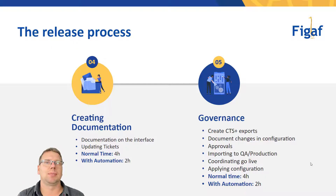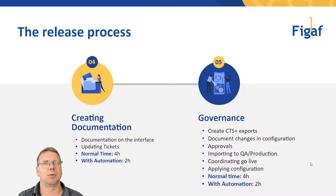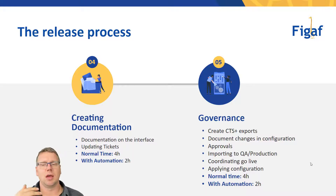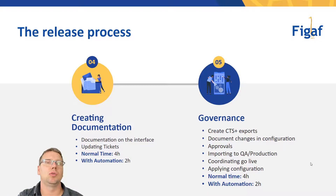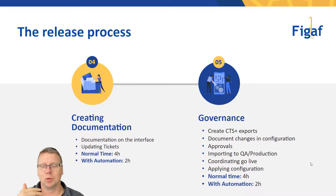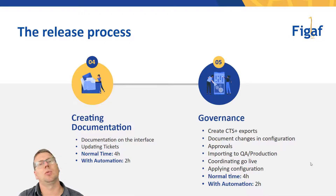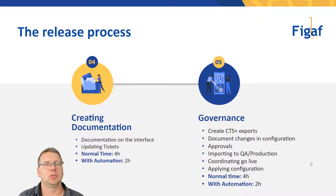Then we get to the governance part. This is about documenting what you're doing and having the proper change management processes in place. You would need to create CTS transports, document the changes that you have done, ask for approvals, and import to QA and production. After you've done that, you need to apply the configuration and coordinate when go-live should be done. There's a lot of work involved in this process that spans multiple people. Normally you would probably take four hours, and with automation you can do it in just two hours.